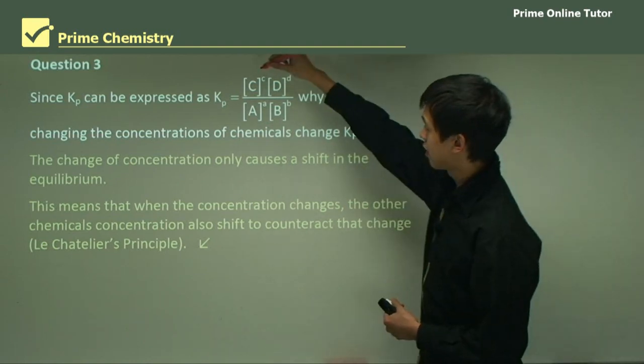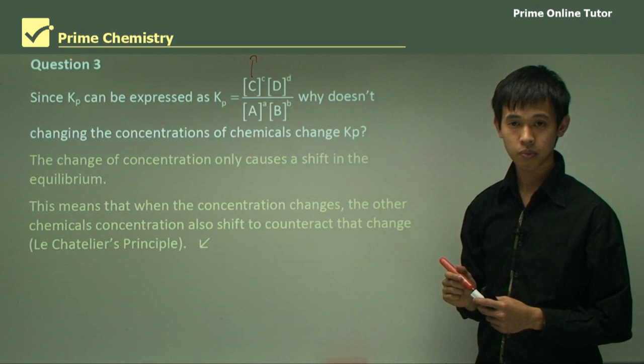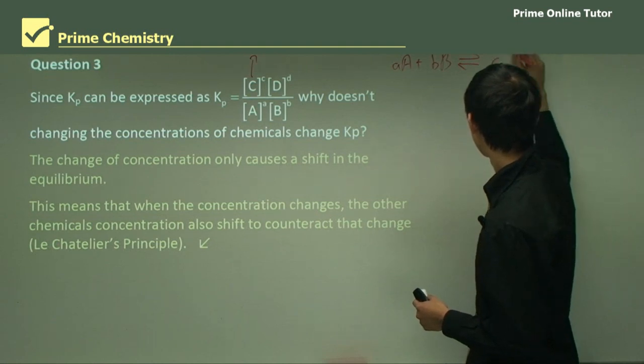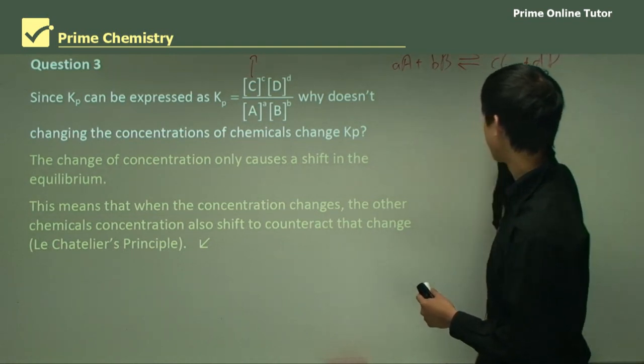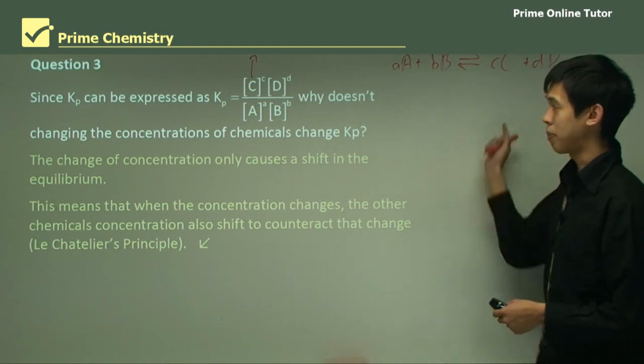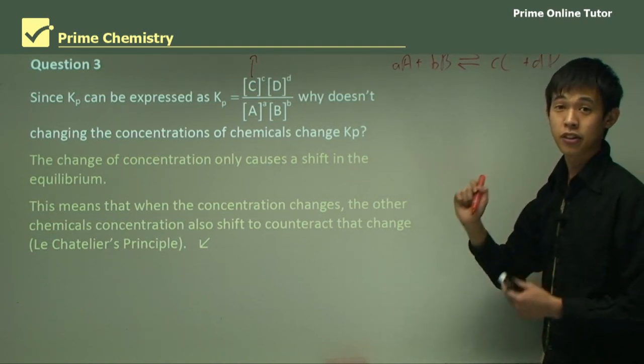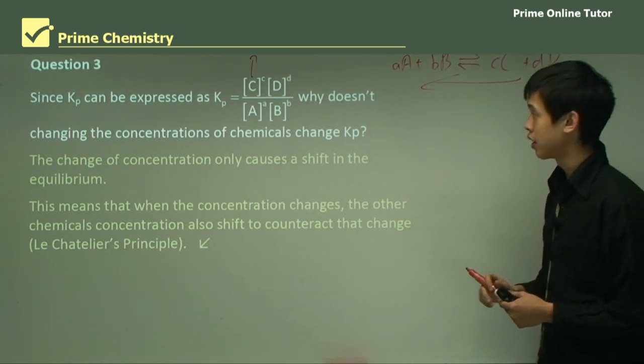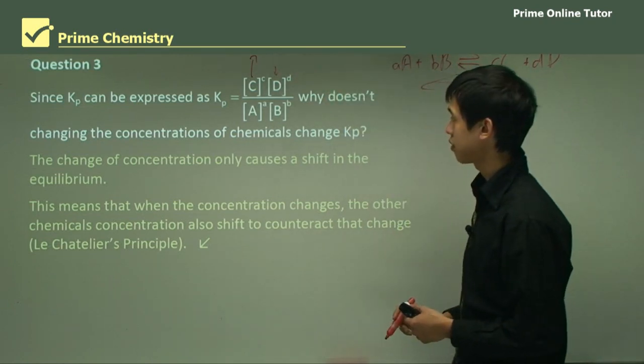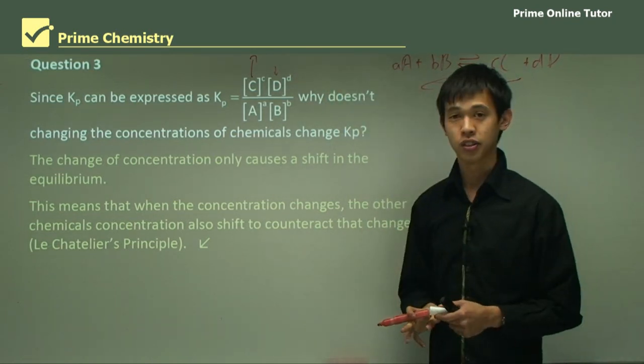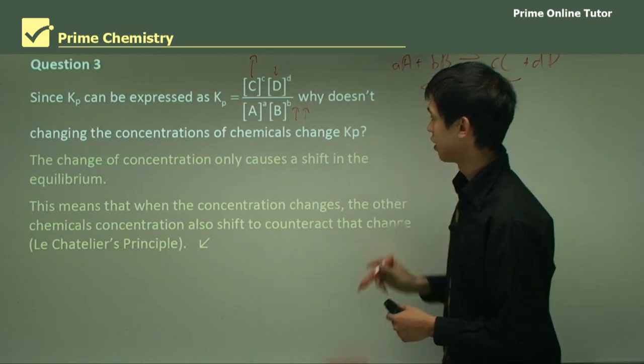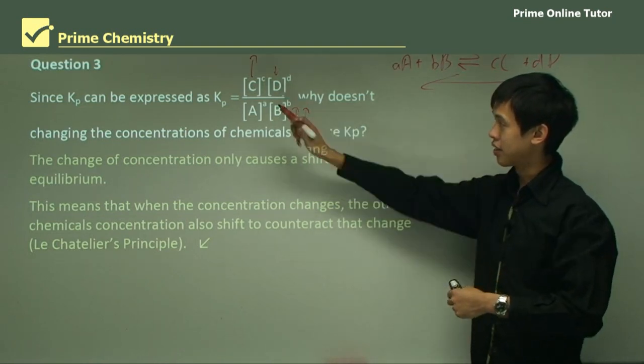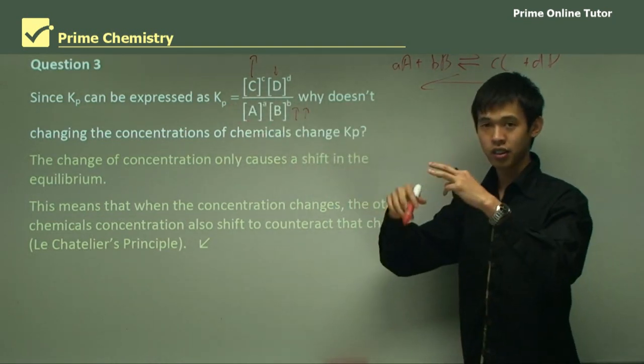So let's say C increases, right? Remembering that we've got the equation. Now if C increases, what happens to D? D must decrease because the reactions will start to go this way, right? So this will decrease slightly. Now what will happen to A and B in terms of their concentrations? They'll also go up slightly. So as you can see, if C increases, D decreases, right? So Kp has sort of stayed the same a little bit.